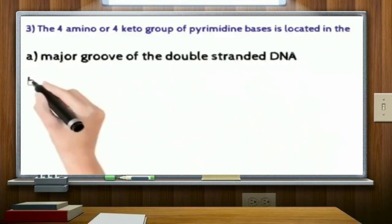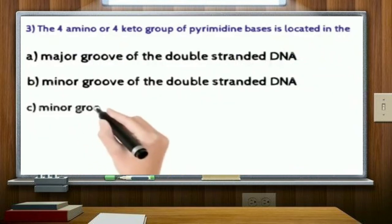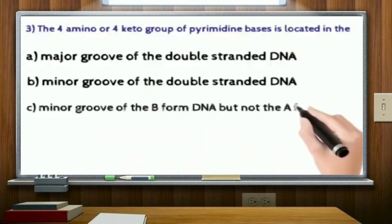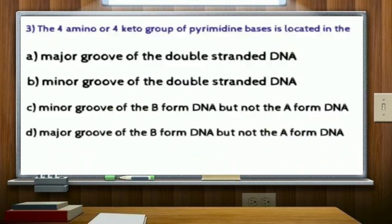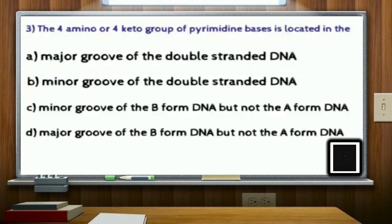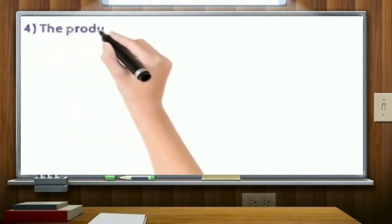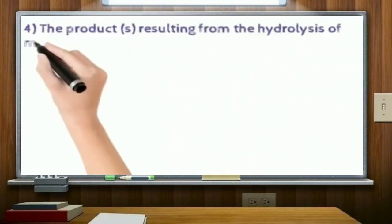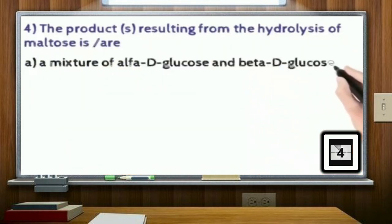The 4-amino or 4-keto group of pyrimidine bases is located in the: option A, major groove of the double-stranded DNA; option B, minor groove of the double-stranded DNA; option C, minor groove of the B-form DNA but not the A-form DNA; and option D, major groove of the B-form DNA but not the A-form DNA. Correct answer: option A.